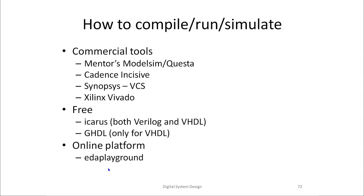Because the language is specific, the software used to compile, run, and simulate is also different and more specific to those languages. There are multiple commercial tools available. A couple of EDA — Electronic Design Automation — companies build and design these softwares. We can use these softwares to compile, run, and simulate. The big three or four EDA companies each have their own tools.